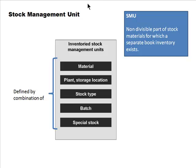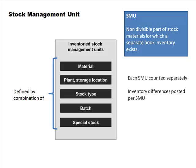A Stock Management Unit (SMU) is a non-divisible part of stock material for which a separate book inventory exists. What we see as the book inventory is really a total of some of these things. Each stock management unit is counted separately during physical inventory procedures. Stock keeping unit identifies a specific product in places like Costco and Sam's Club, but here you may have multiple stock management units for the same product.